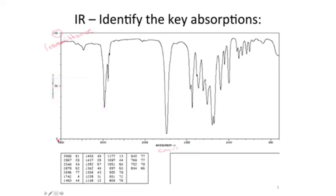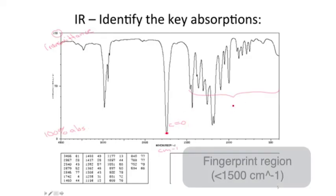As I mentioned before, because there are so many peaks under 1500, we tend to ignore them. They're not particularly useful for our purposes in this course. This is called the fingerprint region, because it is unique for every single type of molecule, and so it can be used as a molecular fingerprint.